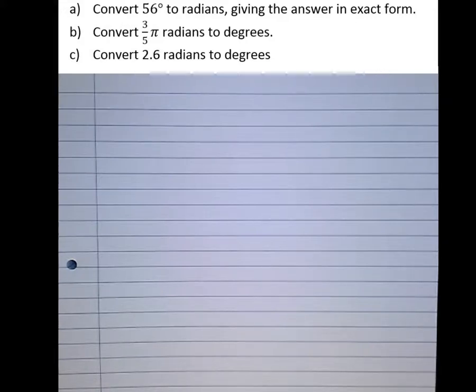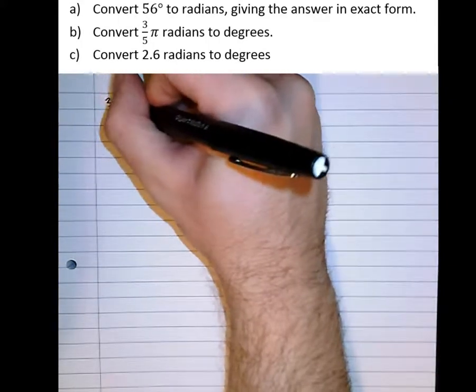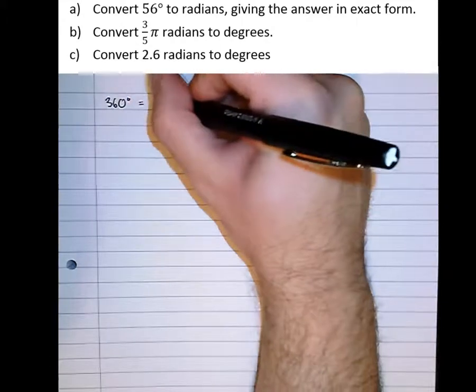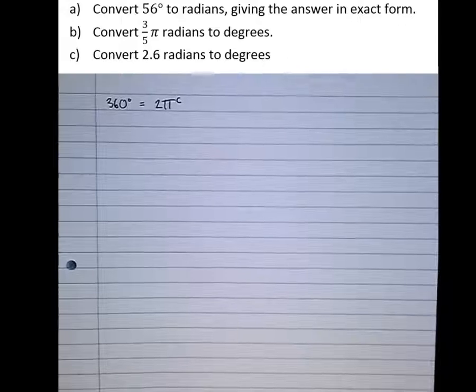Looking at this question here, it says convert 56 degrees to radians given the answer in exact form. Well first of all, let's start off by writing a fact about degrees and radians that we know to be true. We know that 360 degrees is 2π radians, so that's going to be our starting point.